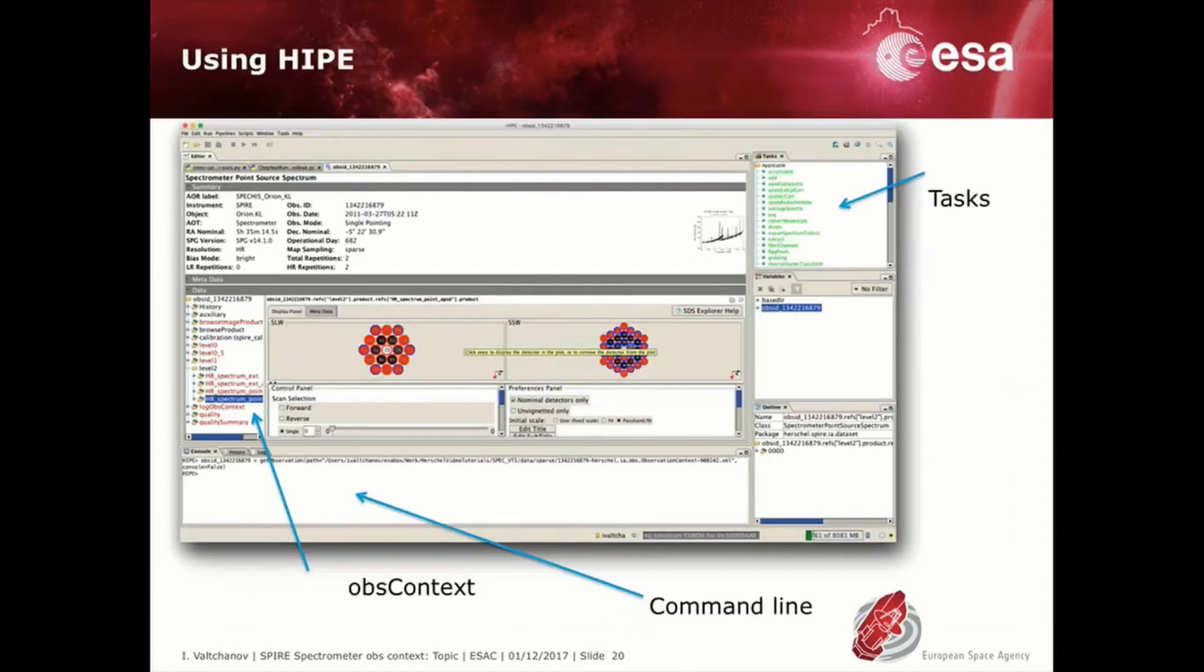In HIPE we have access to the same structure as the folders, but in addition we also have access to a command line console and to different applications and interactive tools linked to the various product types. These are called tasks.